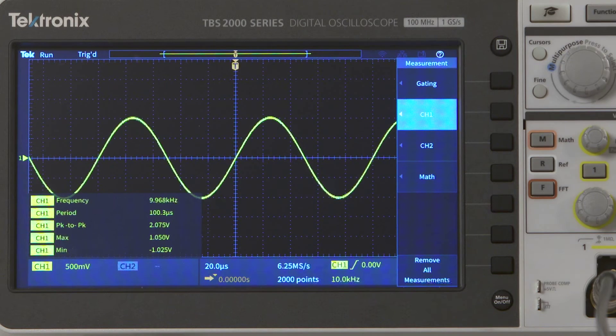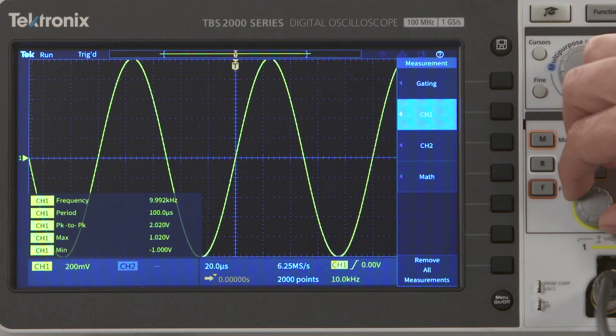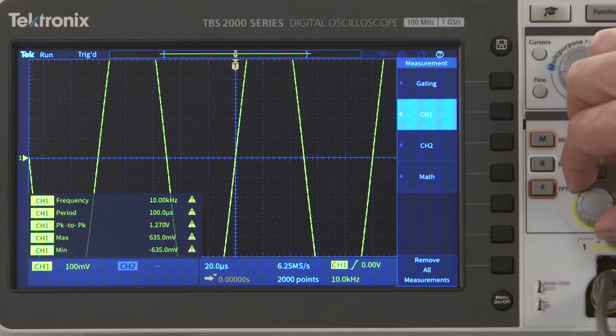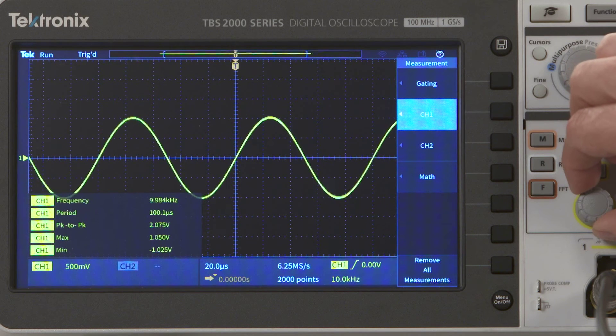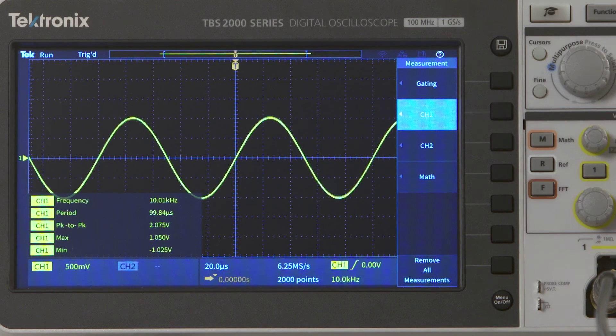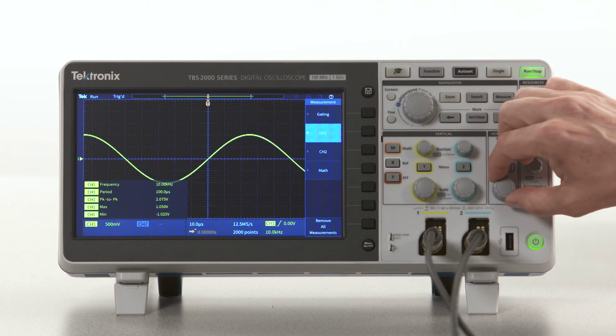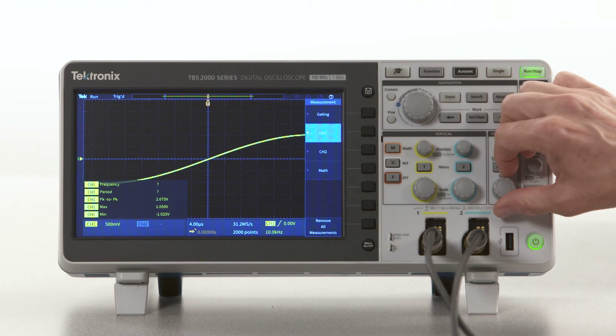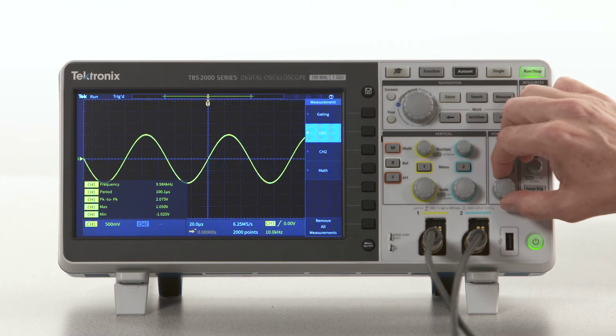Changing the vertical scale to make the most of the range of the scope will improve the accuracy of your measurements. However, the waveform should stay inside the scope display. If the waveform is clipped, the measurements will be unreliable and you'll get a warning. Similarly, if the horizontal scale is too low and the instrument doesn't have more than a complete cycle, it won't be able to compute period or frequency measurements.